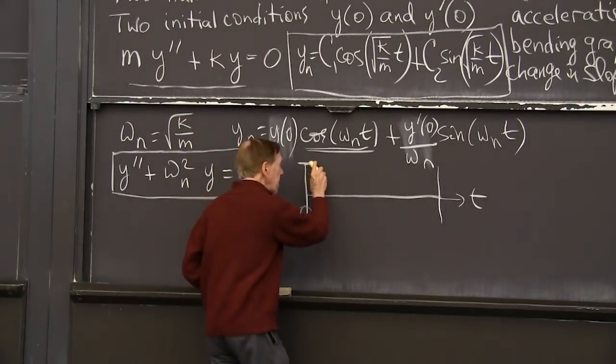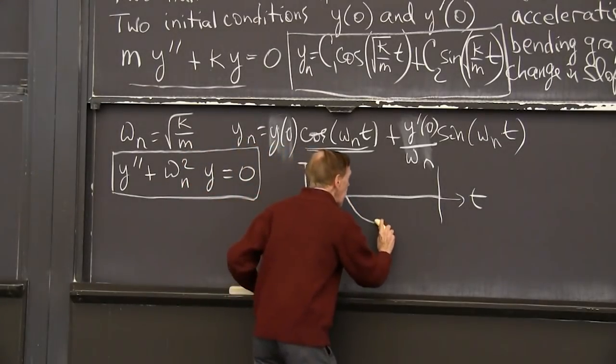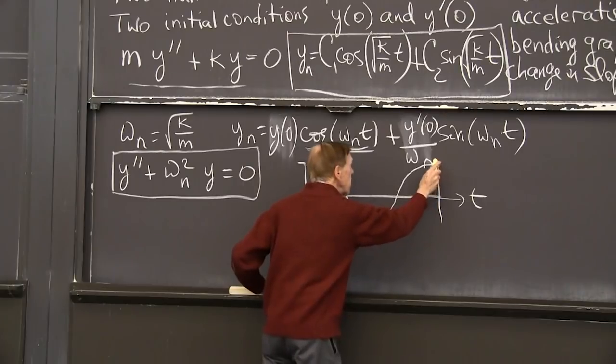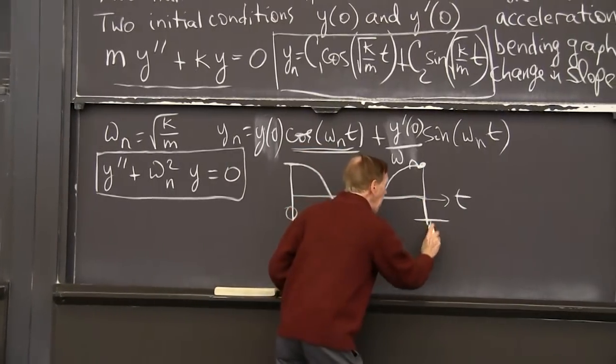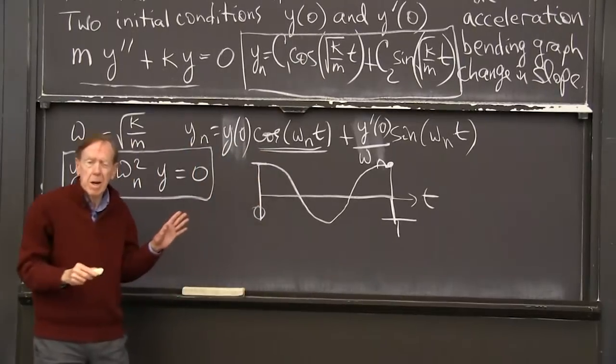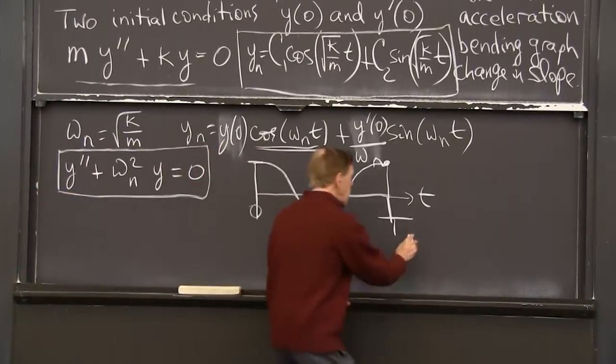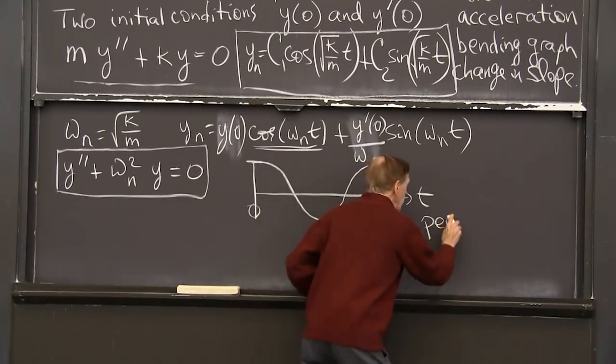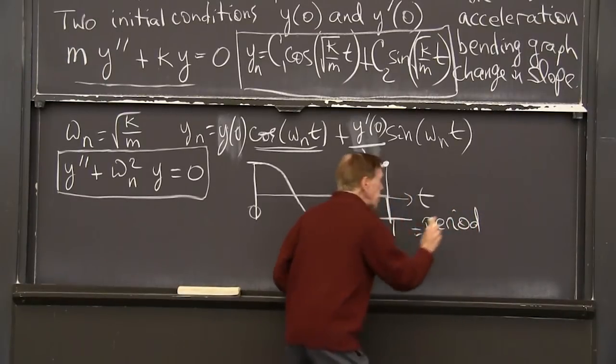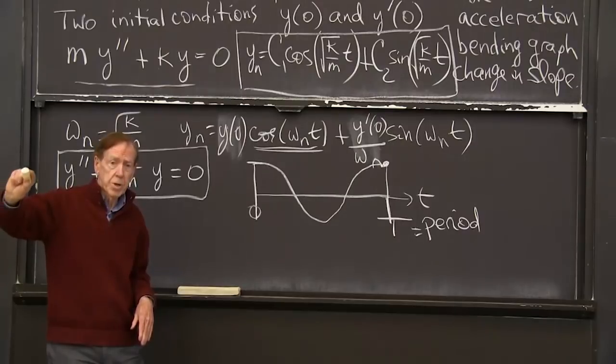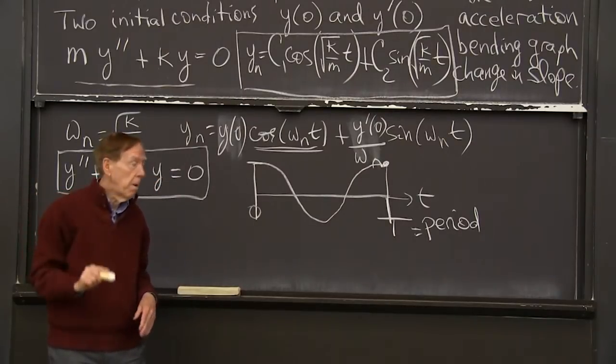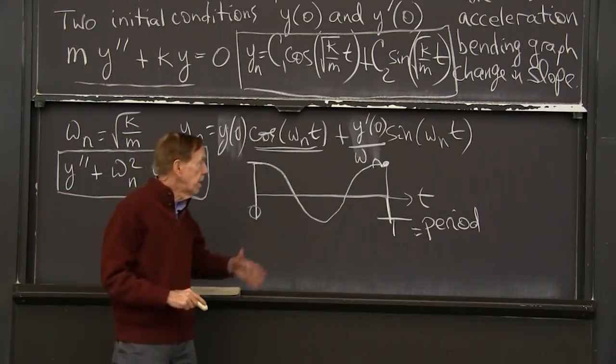So cosine of omega t is what I want to graph. So it starts at 1. And it comes back. It drops, comes back up, comes back to 1. But what is this t_final? The period. This t is the period of the oscillation. It's the time it takes for the swing to go up and back.